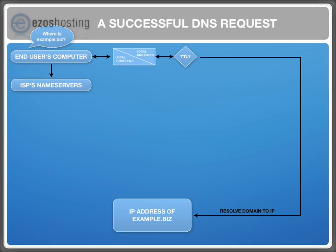Your internet service provider has name servers for you. They are basically a gateway to the internet. The ISP name servers act as an agent to get an IP address. Before they look up a host name, they check if someone recently looked up the same domain name. They too have the timestamp, but many ISPs ignore the broadcasted timestamp and have their own rules on how long this information will be cached. If the information was previously cached, it will resolve the domain to the IP address.